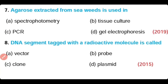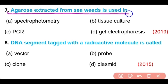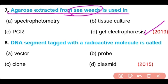Question 7: The agarose that is extracted from seaweeds is used in — spectrophotometry, tissue culture, PCR, or gel electrophoresis? Option D is correct. Agarose is a gel extracted from seaweeds and used in gel electrophoresis.